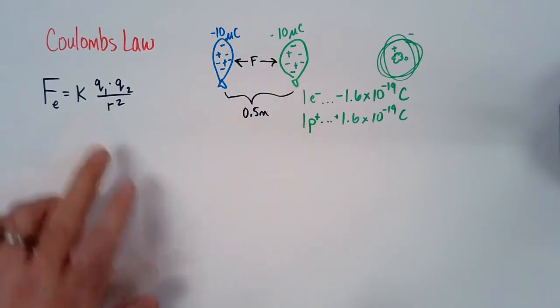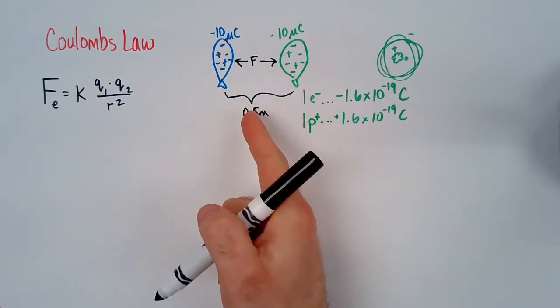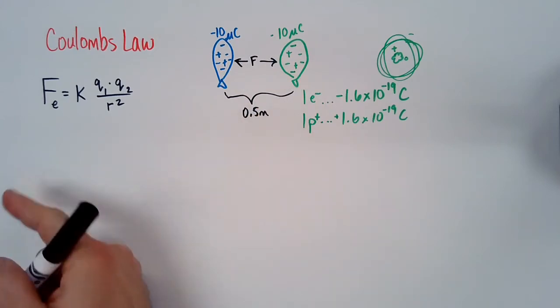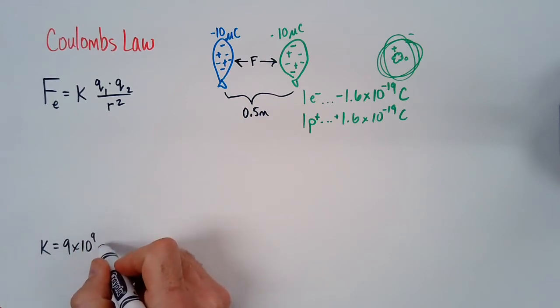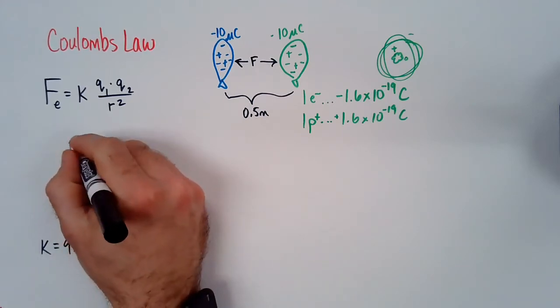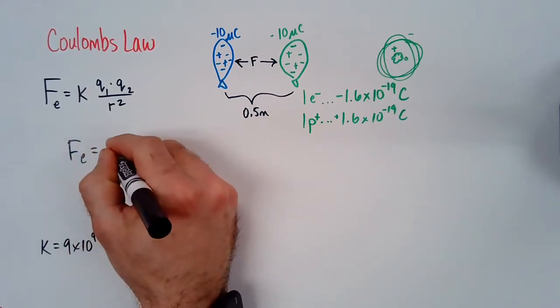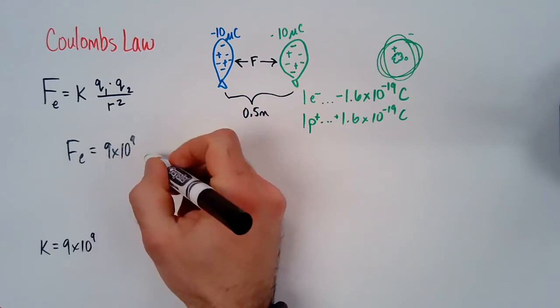The last thing is to mention this K value. Since we're going to use Coulombs and meters, K is just a specific number. K is 9 times 10 to the 9th, and then it has some goofy units I'm going to come back to in a minute once we enter numbers here. So electric force equals 9 times 10 to the 9th. We'll come back to the units.